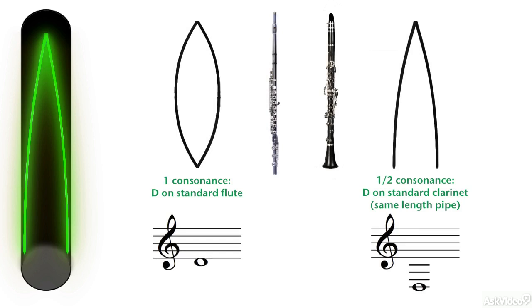The clarinet, about roughly the same length as a flute, will produce a concert D below middle C as its lowest note, not the D above middle C.